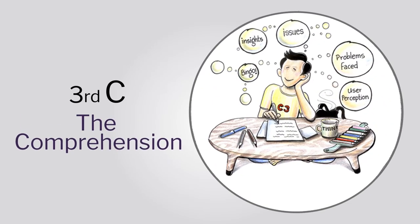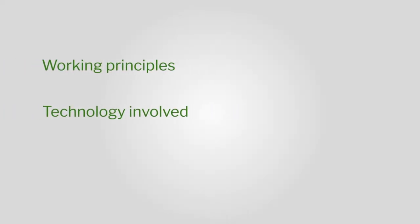Now look at the third C, which is Comprehension — arriving at design insights. We've done this deep dive into the user problem and understood everything about all these aspects. Then what are we taking home? How are we synthesizing all this into a comprehension? You look at the working principles, the technology involved, the design insights from user studies, and you also map the socio-economic structures — who is buying what, and what happens.